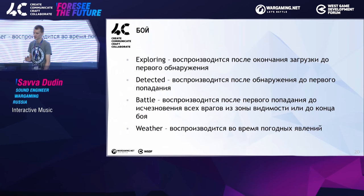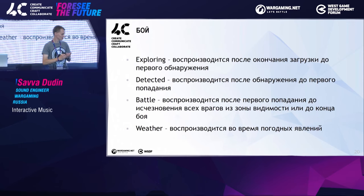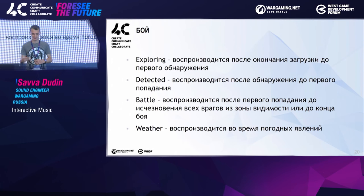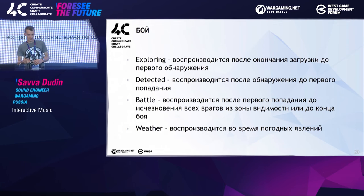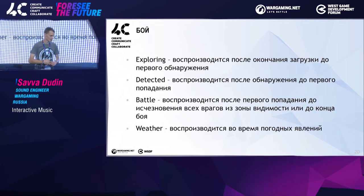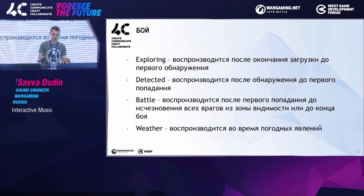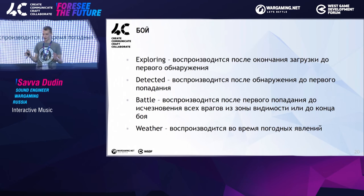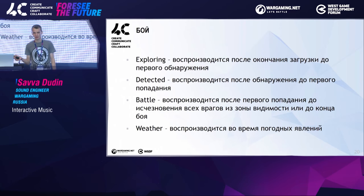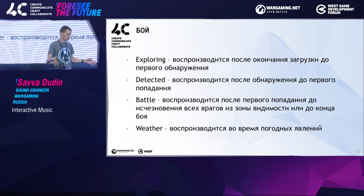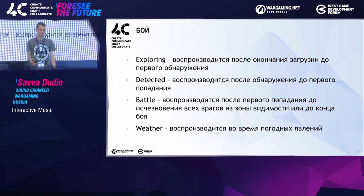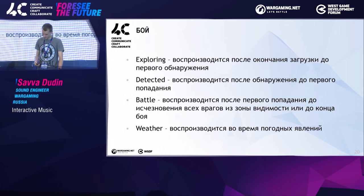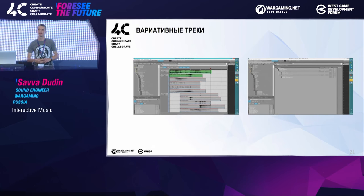Let's see the battle now — the most important and interesting part. We have three major states: Exploring, Detecting, and Battle. There's a separate step for weather. When in the exploring phase, you start sailing until you're detected. As soon as you're detected, we move to the detected state. It plays until the first shell hits you, and then you go into the battle state. Battle music plays until the battle runs off, or until there's no enemy ship within a certain distance. Then we continue exploring, and it repeats — detected and battle will come on again.